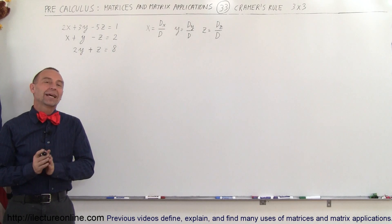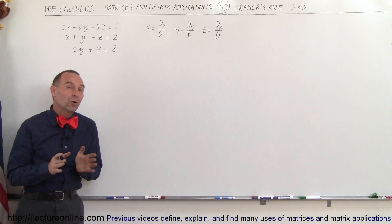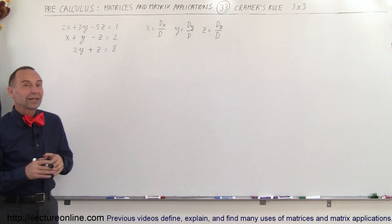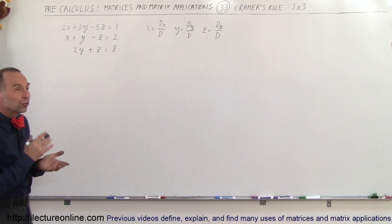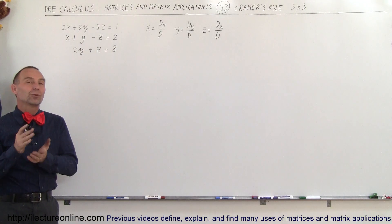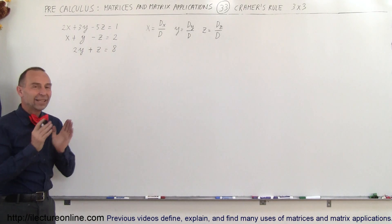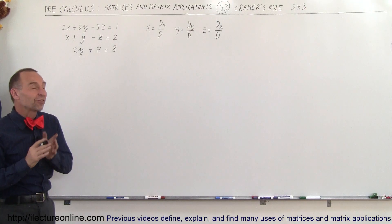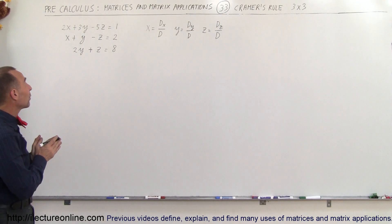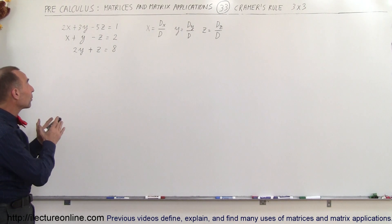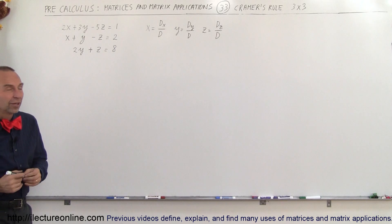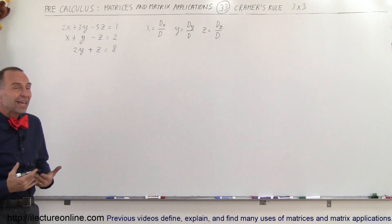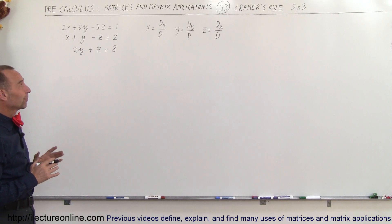Welcome to ElectronLine. In the previous video we used Cramer's rule to solve a system of linear equations with two equations and two unknowns. In this video we're going to show you how to use Cramer's rule to solve a system of linear equations with three equations and three unknowns. The methodology is the same but it takes a little bit more work.